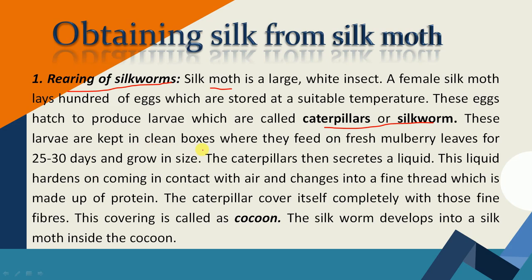These larvae are kept in plain boxes where they feed on fresh mulberry leaves. ये जो larvae होते हैं इनको plain boxes में रखा जाता है और ये feed करते हैं fresh mulberry leaves पर — for 25 to 30 days — ताकि वो अपने size को grow कर सकें.